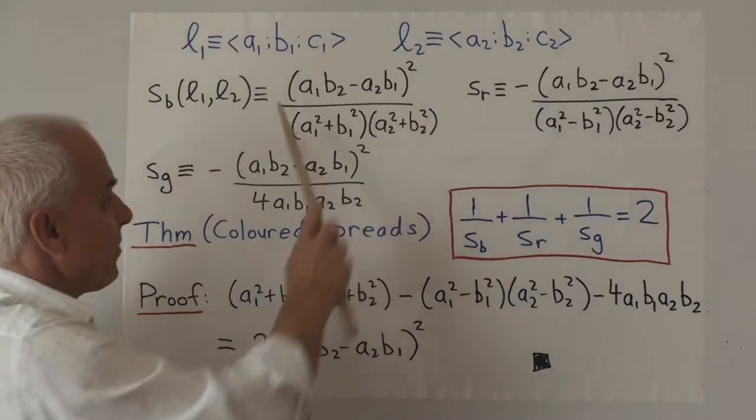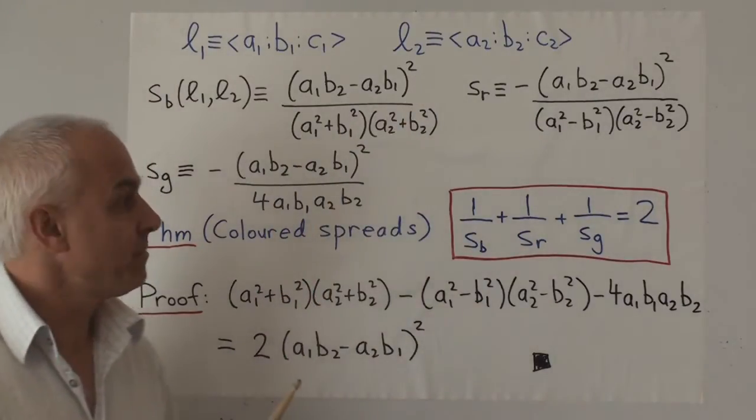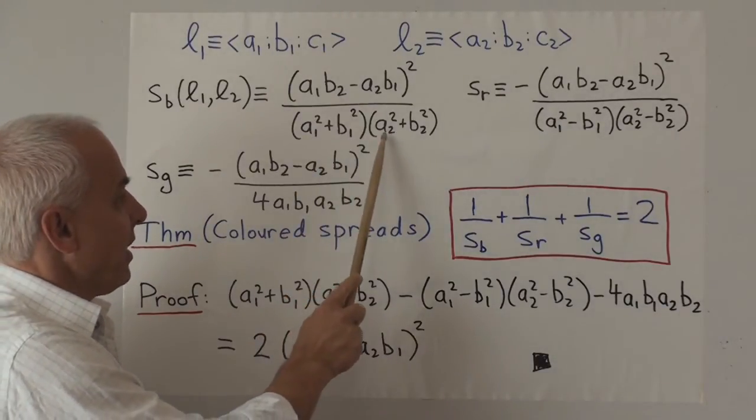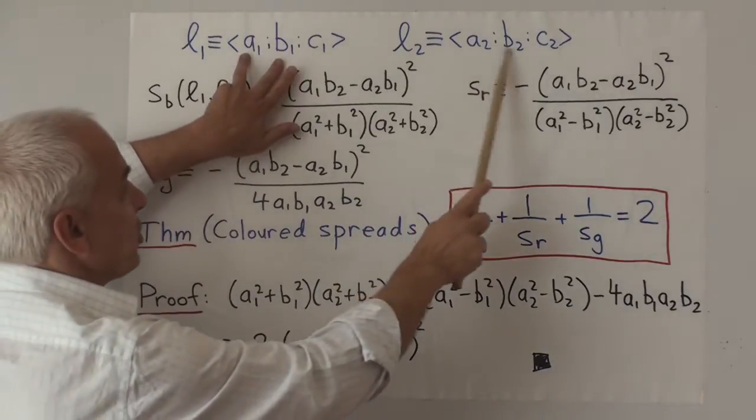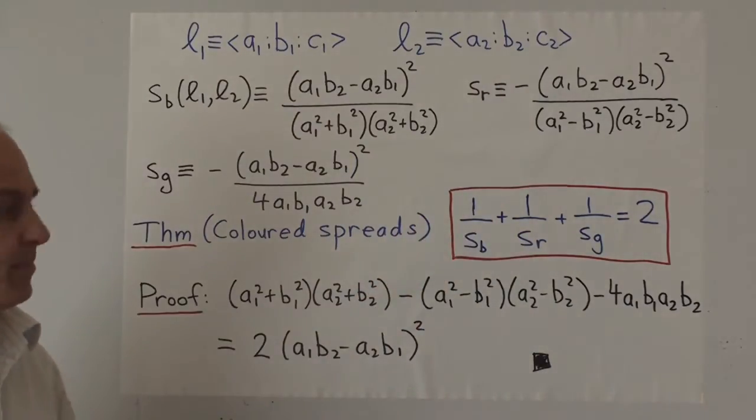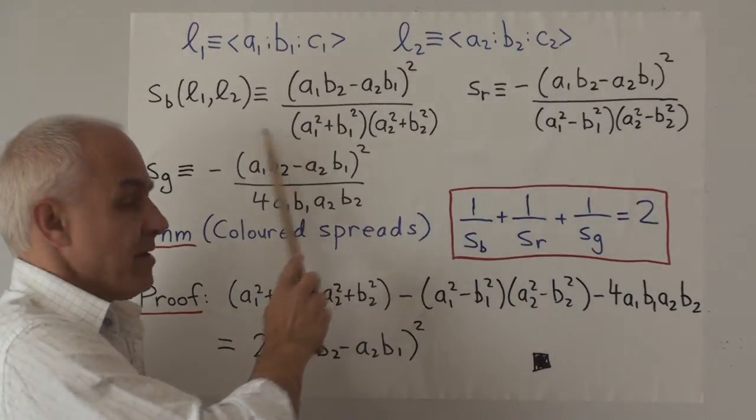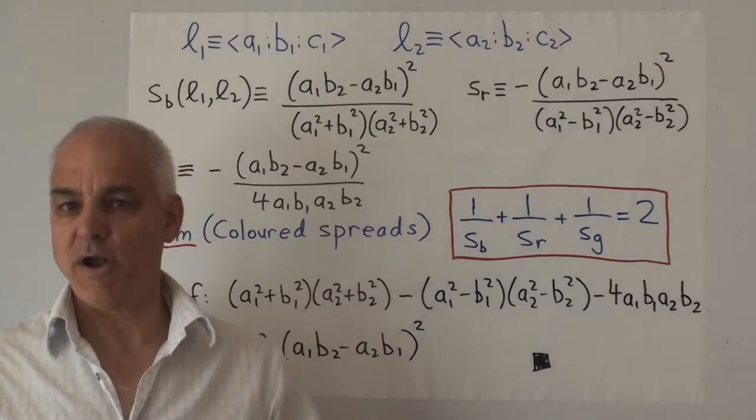It's this expression here (a₁b₂ - a₂b₁)² divided by (a₁² + b₁²)(a₂² + b₂²), so it only depends on the first two numbers in each of the lines. And I remind you that that number is the same as the square of the sine of the corresponding angle.